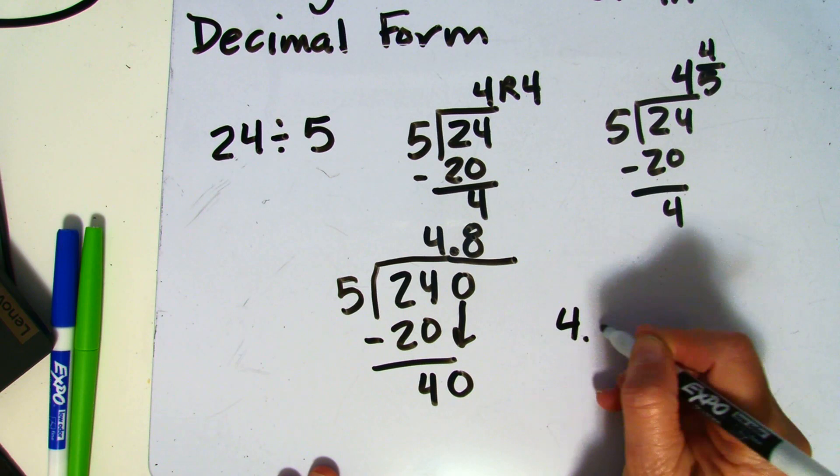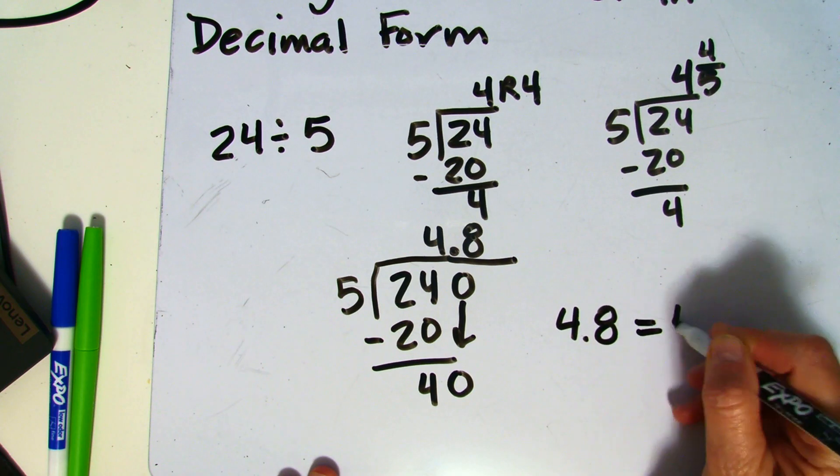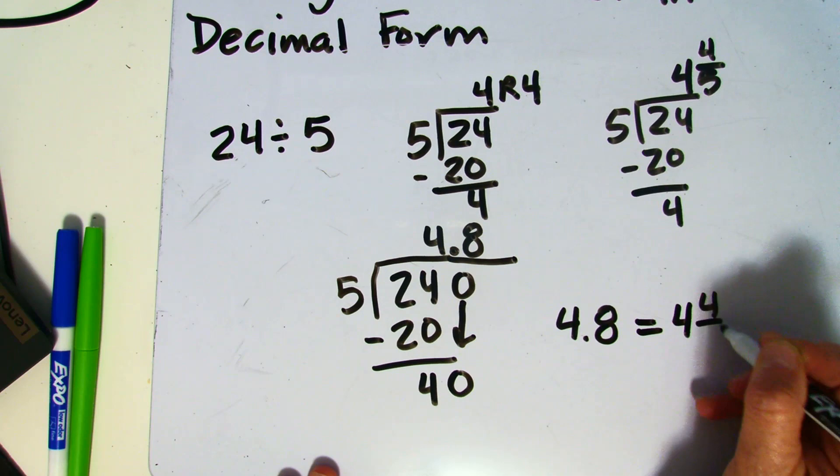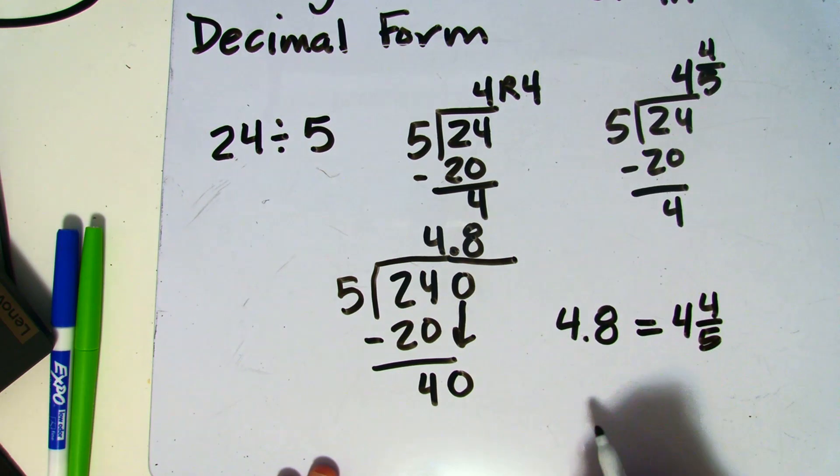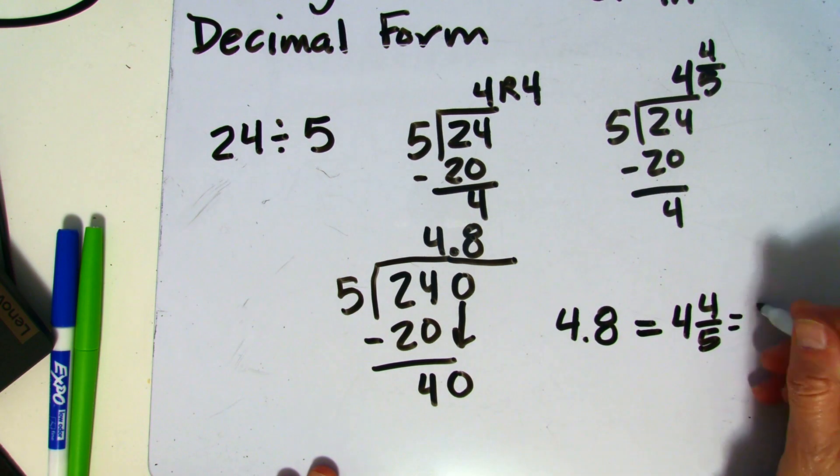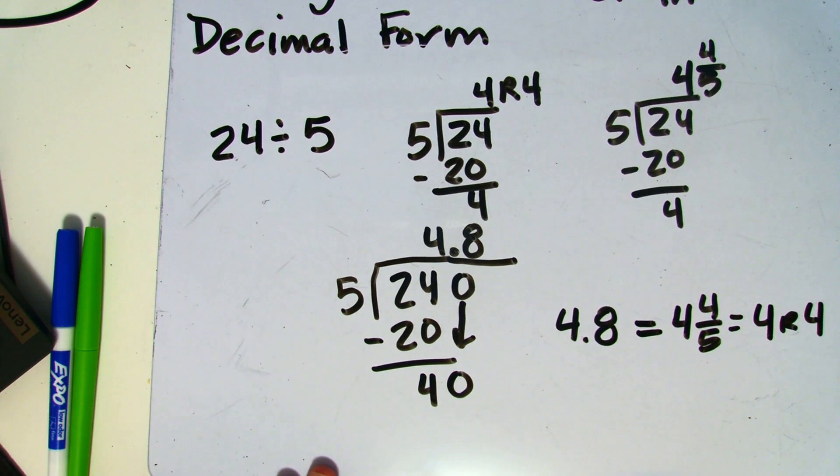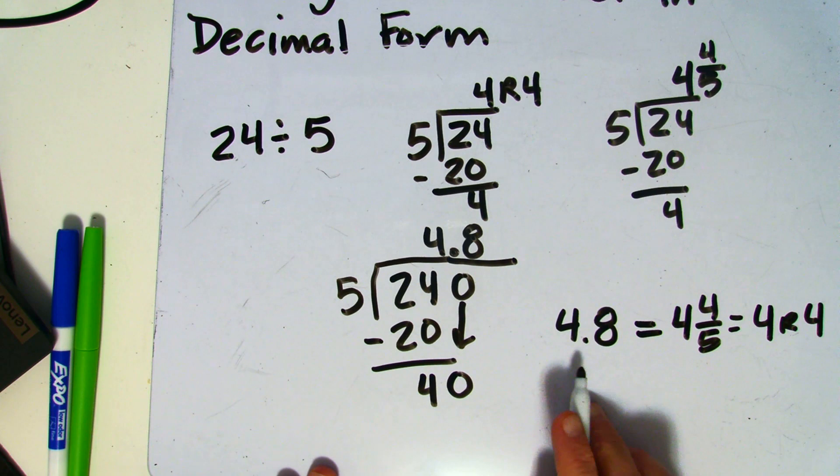Now 4 and 8 tenths is equivalent to 4 and 4 fifths. And in a future lesson, we'll look at how we can convert between those two. It's also equivalent to 4 remainder 4. This is how we would write it as a decimal amount.